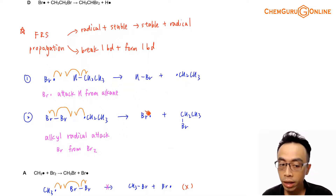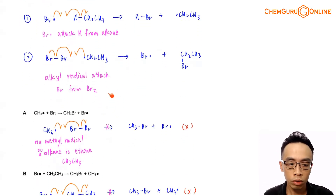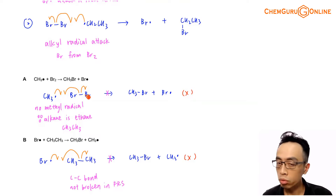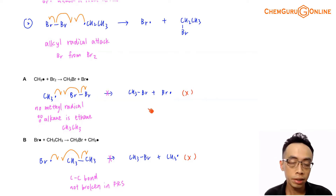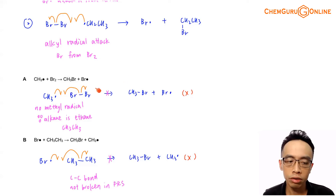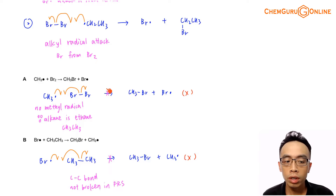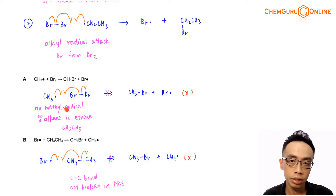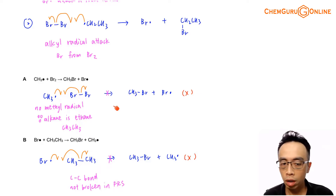Looking at option A, we have a methyl radical attacking a bromine molecule to form bromomethane and a bromine radical. This propagation step is wrong because for this question we are dealing with ethane, which is a two-carbon compound. We do not have methyl radicals in the reaction mixture, so option A is definitely wrong.